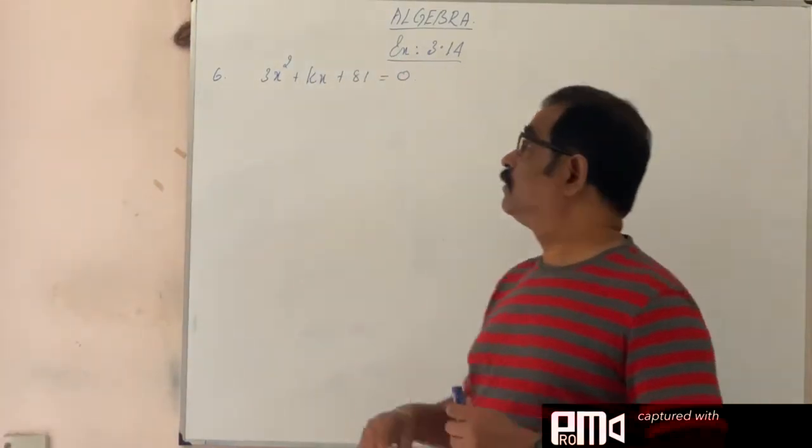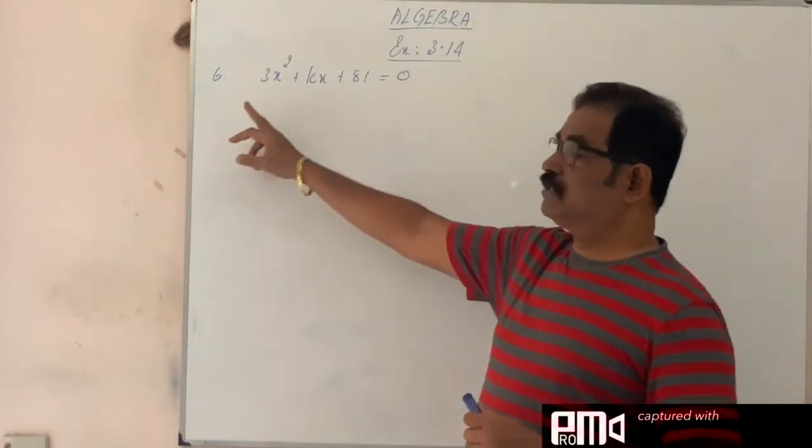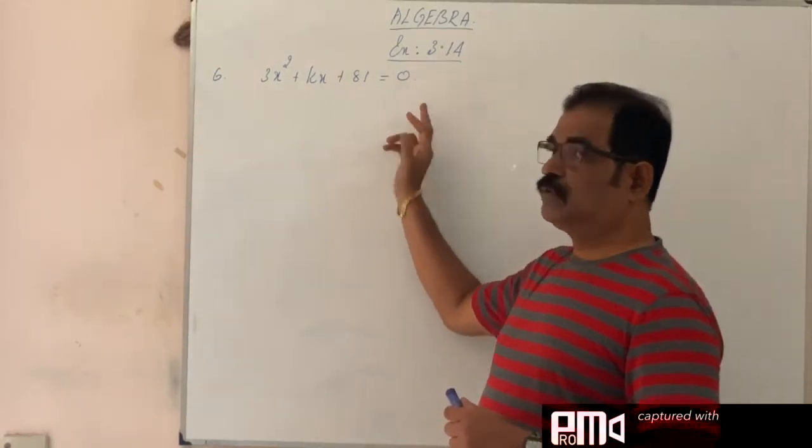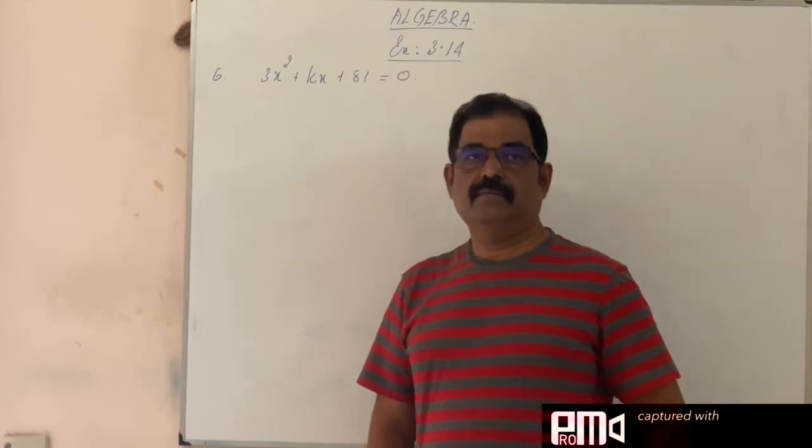Good morning students, exercise 3.14, question number 6. 3x square plus kx plus 81 is equal to 0, this equation is given. Also given, one root is square of the other.